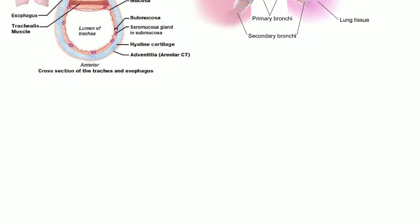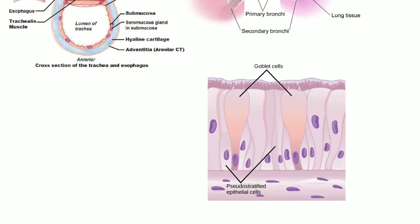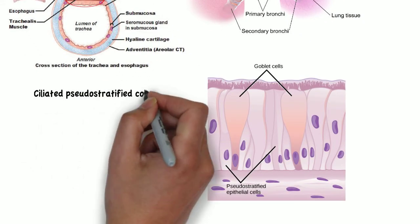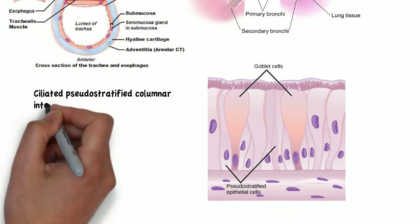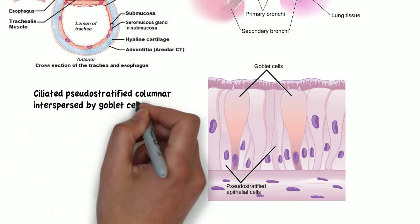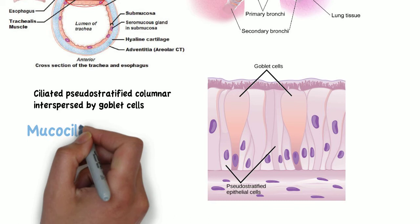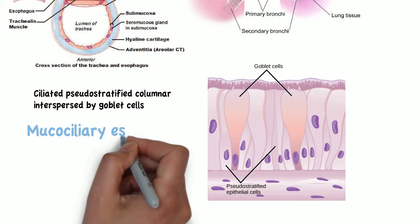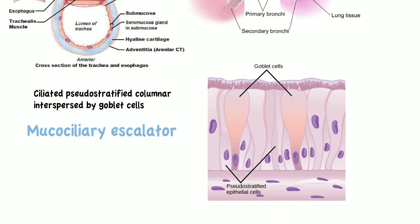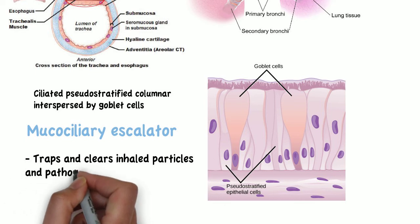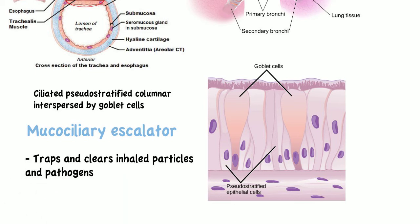The trachea and bronchi are lined by ciliated pseudostratified columnar epithelium interspersed by goblet cells, forming the functional mucociliary escalator, which acts to trap inhaled particles and pathogens, moving them up out of the airways to be swallowed and destroyed.